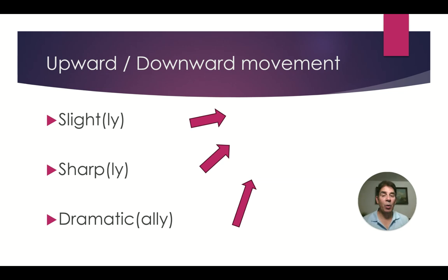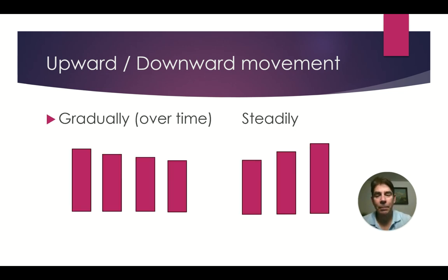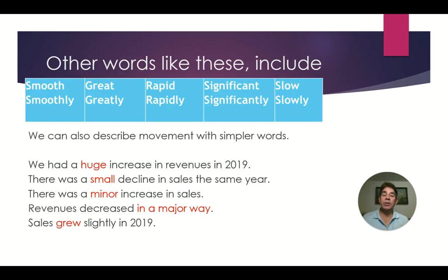Let's look at some of these words in more detail. Slight or slightly means a little bit — increase or decrease by just a little bit. Sharp or sharply means a lot. Dramatic or dramatically means very much. If it's a slower change, we can say gradual or gradually over time. If it's the same rate of change, we can say steady or steadily. Other words like these include smooth or smoothly, rapid or rapidly, and slow or slowly.